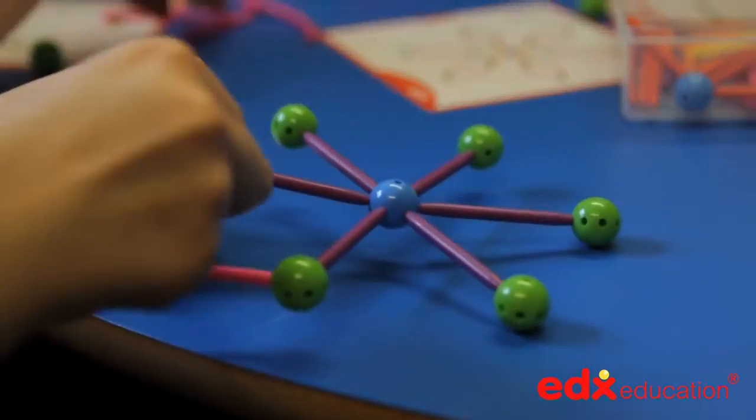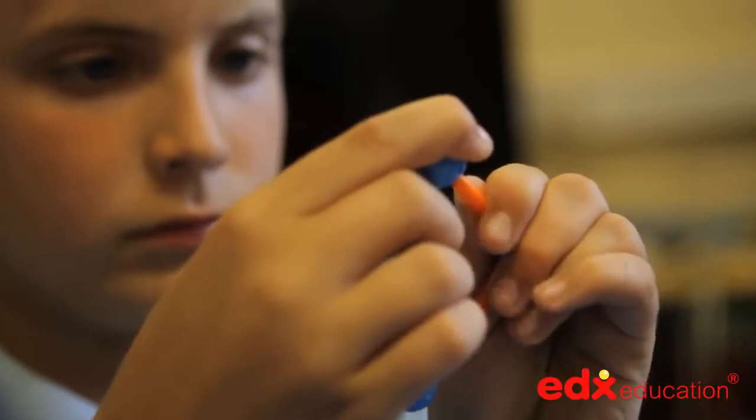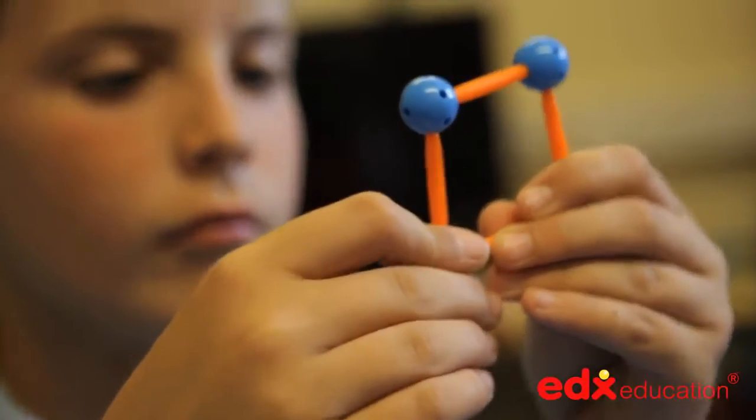The green balls have eight holes around their equator and the blue balls have six, giving a variety of angles.